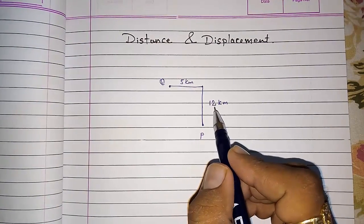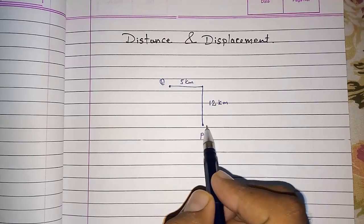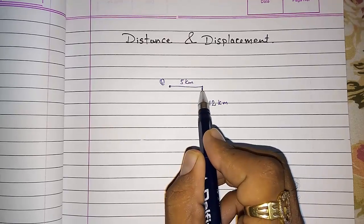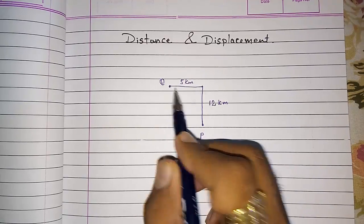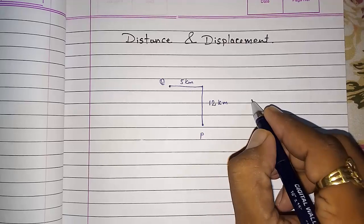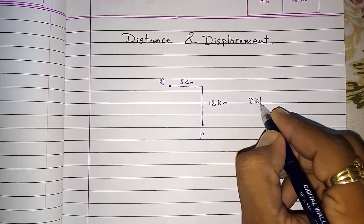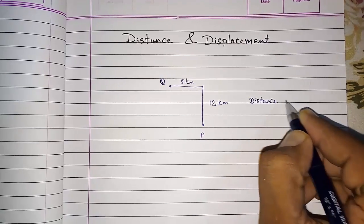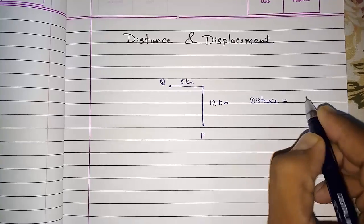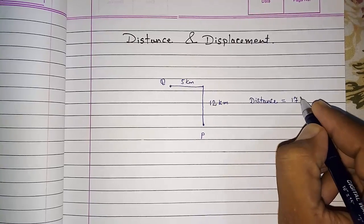So what is the distance covered by Ram? First he moved 12 kilometers, then 5 kilometers. So the distance covered by Ram will be 17 kilometers.